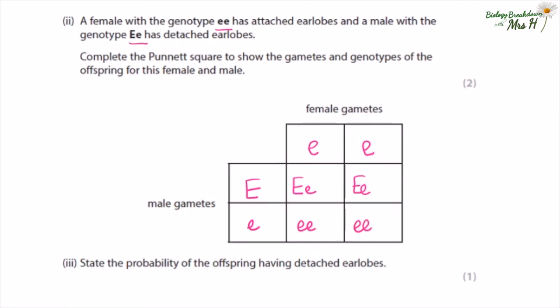State the probability of having detached earlobes. Looking back at the information in the question, we can see that Ee will have detached earlobes, and two out of four possible combinations would result in detached earlobes — so a 50% chance. Remember this is probability, so each time this couple have a child there is always a 50% chance of the child having detached earlobes.